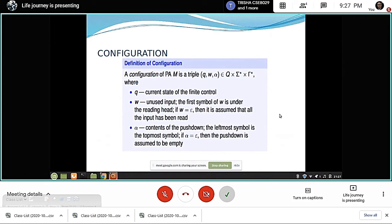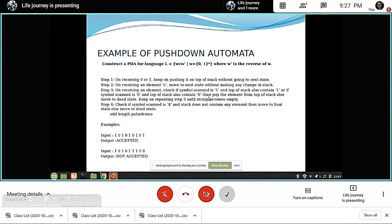Example of pushdown automata. Construct a PDA for language of this given value where W is reversed of W. In this process we have several steps which are mentioned here. In step one, on receiving zero or one, keep on pushing it on top of the stack without going to the next state. Step two, on receiving an element C, move to the next state without making any changes in the stack.